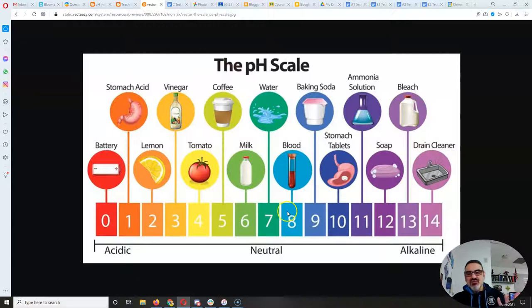Higher than 7 are what we call bases, basic, or alkaline. You've got 8 is your blood, and that's a good pH for your blood, it's a little bit basic. So is seawater. So the ocean tends to be a little more basic, creek water tends to be a little more acidic, but they're both really close to 7, so they're not super strong.